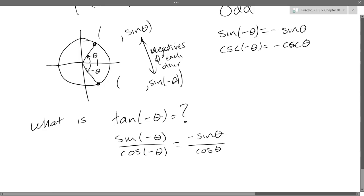Now we're going to rewrite this back into tangent. So we have negative sine over cosine, negative tan theta. So that is odd. Tangent negative theta equals negative tan theta. And cotangent, the reciprocal, has the same property.